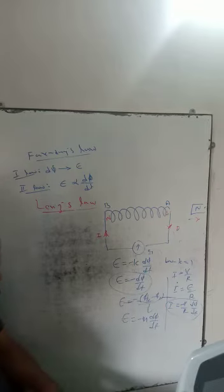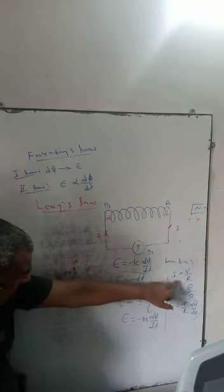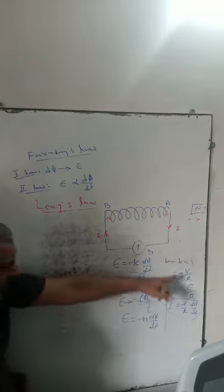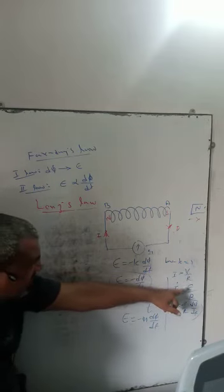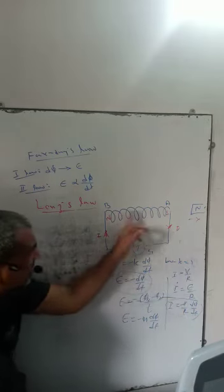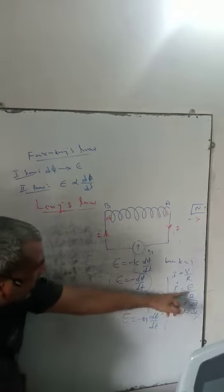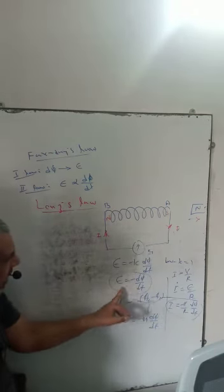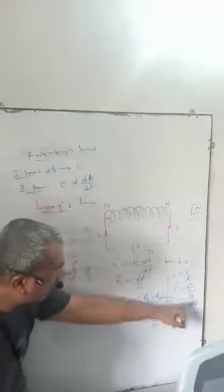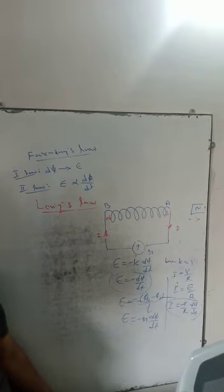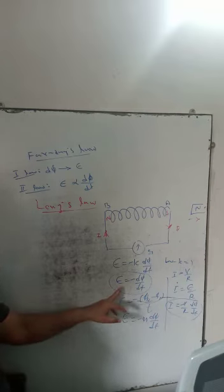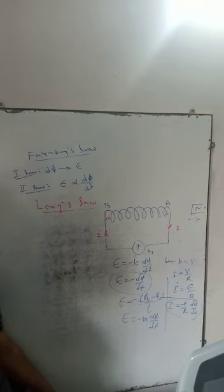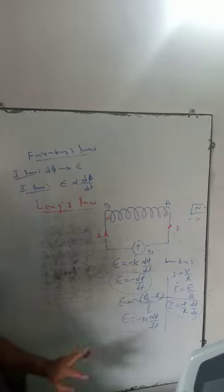Here is the equation for induced EMF. The induced current is equal to V by R, where V is the potential difference, which is nothing but induced EMF, and R is the resistance of the coil. So the equation for induced current is I equal to minus 1 by R into dΦ/dt. The equation for induced EMF is epsilon equal to minus dΦ/dt.